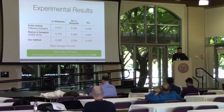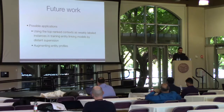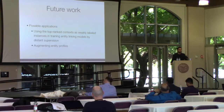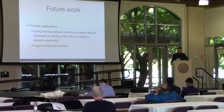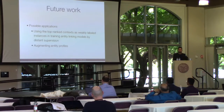There are a couple of possible follow-up applications. Since we can identify supporting contexts with very high precision, they could possibly be used as weakly-labeled instances for training an entity linking model. It should be possible to train a model for long-tail entities without having to label any instances manually. You could also use this context retrieval to augment an entity from scratch. Thank you.